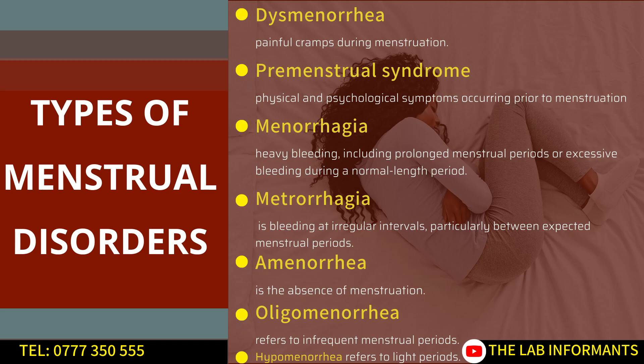There are several types of menstrual disorders. Dysmenorrhea simply means having painful cramps — cramps that are more painful than normal — during your menstrual cycle. Another type is premenstrual syndrome (PMS), where a woman experiences physical or psychological problems prior to their menstruation period.